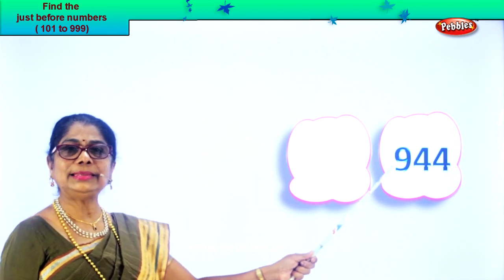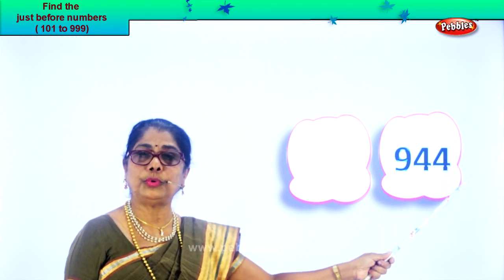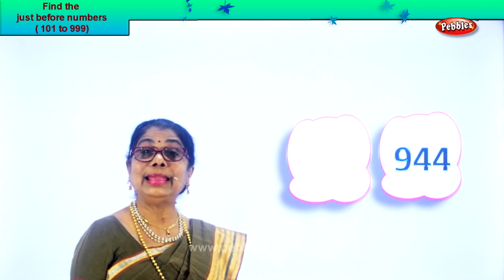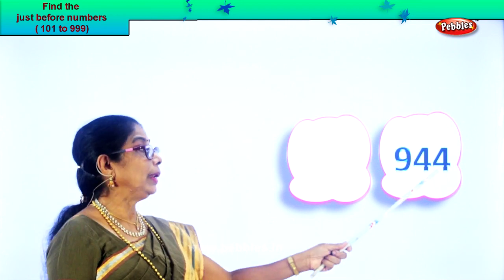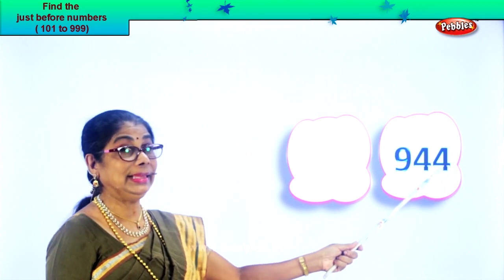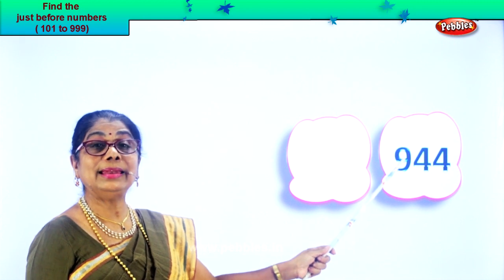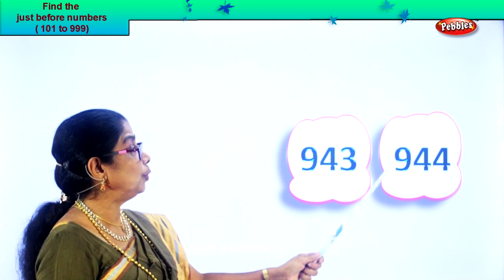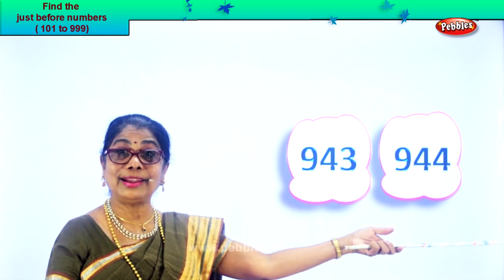Let's go to another number. Read this: nine hundred and forty-four. Four in the ones place, four in the tens, and nine in the hundreds place. The last number is in the ones place — four. What is one less than four? Three. What is one less than forty-four? Forty-three. Then nine hundred and forty-three is the number just before nine hundred and forty-four. Nine hundred and forty-three, nine hundred and forty-four.